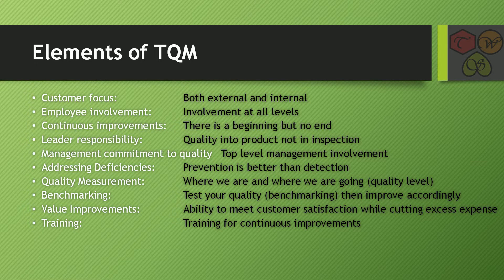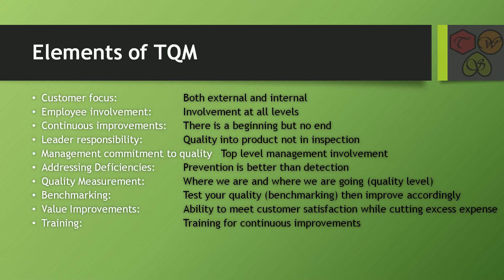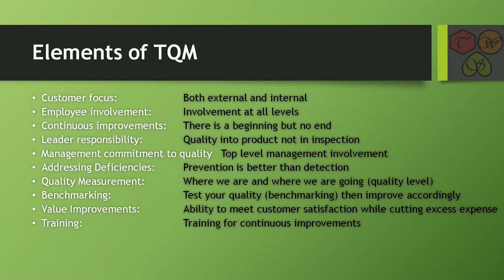The seventh one is quality measurement. This means knowing where we are and where we are going, at different quality levels. Suppose we make a product — we check its quality, identify at which level the quality is, and then improve it from that particular level. So it is a continuous process.